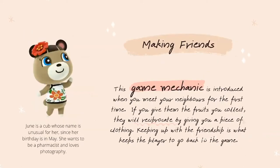One of the game mechanics is making friends. The more you befriend your neighbors, the closer you become. When you give them fruits they will reciprocate by giving you clothing or something back. If you give them flowers, shells, or furniture, sometimes they'll take it and give nothing back - but giving fruits usually gets a reciprocation. Keeping up with friendship is what keeps the player coming back to the game, because the closer you are, the more freebies you get. June is a cub whose birthday is in May - she wants to be a pharmacist and loves photography.